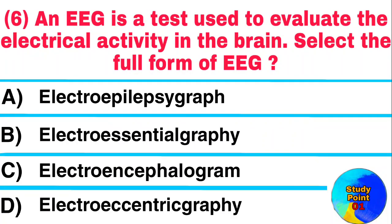Question: An EEG is a test used to evaluate the electrical activity in the brain. Select the full form of EEG. Answer: Electroencephalogram.